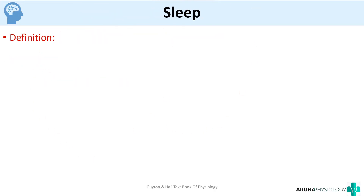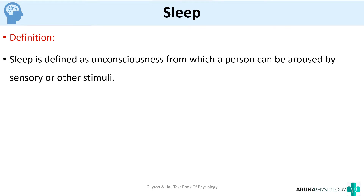So what is meant by sleep? Sleep is defined as unconsciousness from which a person can be aroused by sensory or other stimuli. There is a difference between sleep and coma — in coma the patient cannot be aroused, but in sleep the patient can be aroused by sensory or other stimuli.